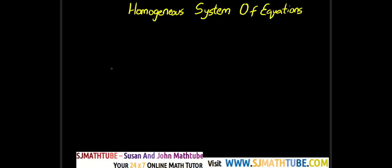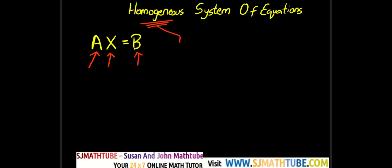We learned how to solve linear equations using rank, or rather using echelon form. The first thing we do is we put our equations in the form AX equal to B, where A stands for the coefficients, X is the column matrix which contains all the unknown variables, and B stands for the right side constants. Now, in the case of homogeneous equations, the system will be AX equal to 0, where 0 represents the zero matrix.